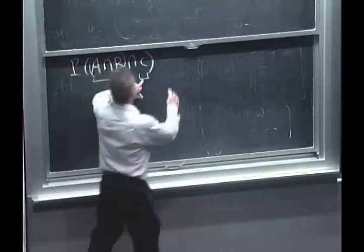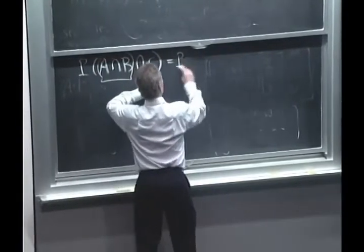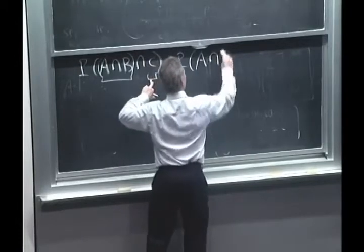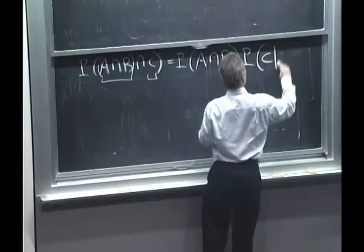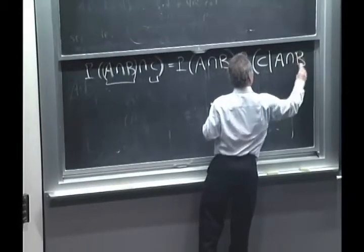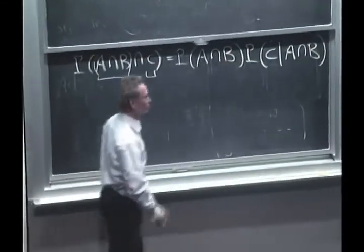The probability of two things happening is the probability that the first happens times the conditional probability that the second happens given A and B, given that the first one happened.